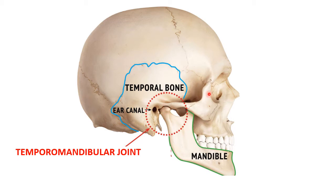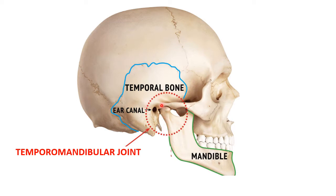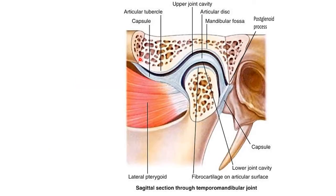Two temporomandibular joints are formed — one on the right side and one on the left side. The movement of one joint cannot occur alone; when one joint moves, the other joint must also move concomitantly. The temporomandibular joint is the most frequently used joint and is involved in many diseases, making it very important to study.